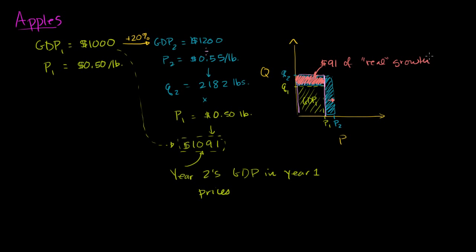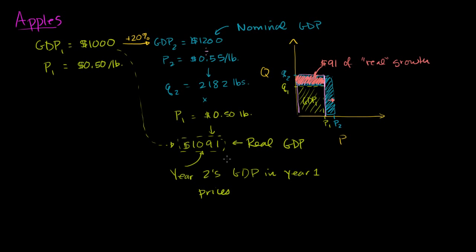That $91 of growth is what we can call real growth — it really measures productivity. One idea is to measure GDP in the current year's dollars: year two GDP in year two prices is nominal GDP — 'nominal' meaning in name, measured at that year's prices. But measuring year two's GDP in a base year's prices allows a real comparison of productivity growth. Our productivity actually increased by 9% — we produced 9% more apples. This we call real GDP, because it gives a measure of real productivity.